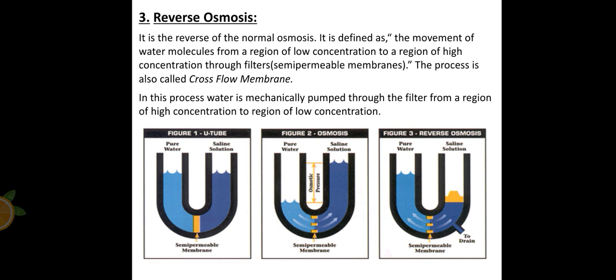Another method that we have is reverse osmosis. It is basically the reversal of normal osmosis. Osmosis is when water moves from high concentration to low concentration, but in this process we move the water from low concentration to high concentration, and the impurities are left on the side. Basically, the movement of water molecules from a region of low concentration to a region of high concentration through filters or semi-permeable membrane, also called cross flow membrane. In this process, water is mechanically pumped through the filter from a region of high concentration to a region of low concentration.